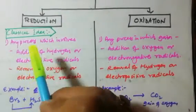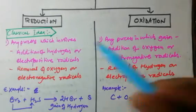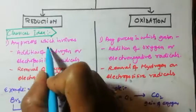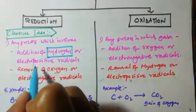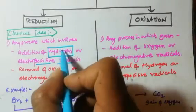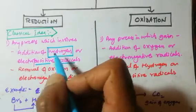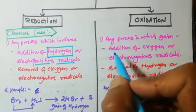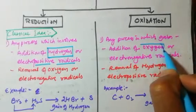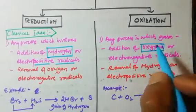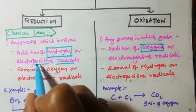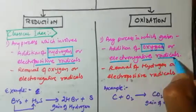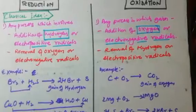On the basis of classical ideas, reduction is any process which involves addition of hydrogen or electropositive radicals — hydrogen is electropositive in nature, so both terms mean the same. On the other hand, oxidation is the addition of oxygen or electronegative radicals.